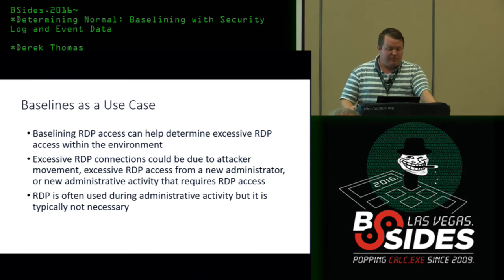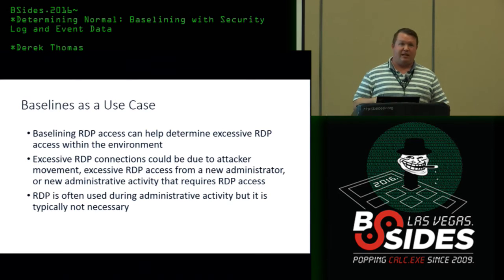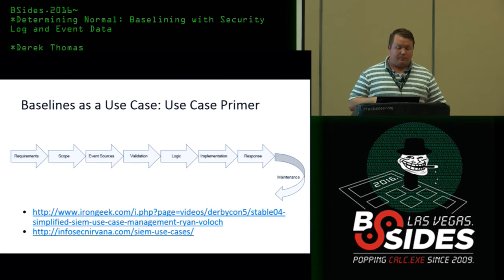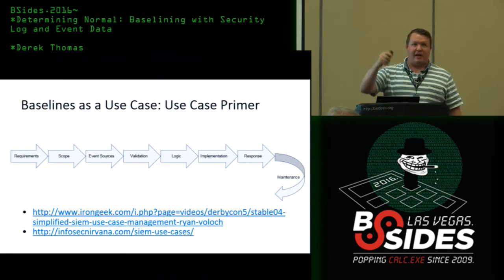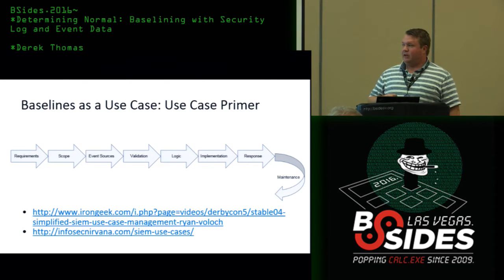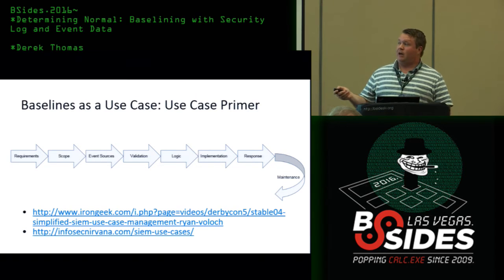We're going to baseline RDP access within the environment. RDP could be used for administration, attacker lateral movement, or excessive connections from a new administrator. RDP should not be necessary for most administration activities, but I find it often is used for that — so this is a good use case because administrators will use it but it may not be malicious. This use case methodology from InfoSec Nirvana outlines a good process, and there's a great SABS talk at DerbyCon covering it. It provides documentation, tracking use cases, and measuring new ones as you create them.